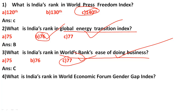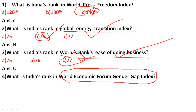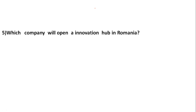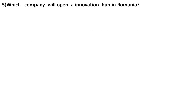India's rank in the World Economic Forum Gender Gap Index — the correct answer is option C: 108. Next, which company will open an Innovation Hub in Romania? The options are Infosys, IBM, and Wipro.